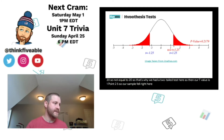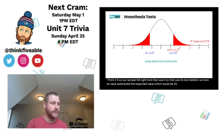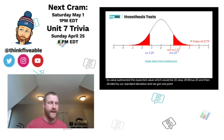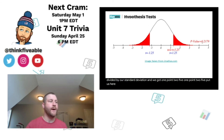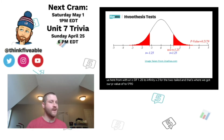With a two-tailed test, our t-value of 1.25 means our sample fell at that point. We calculated it by taking 28 minus 20 and dividing by our standard deviation to get 1.25. We then calculated the p-value using t-CDF from 1.25 to infinity, multiplied by 2 for the two-tailed test, and got a p-value of 0.2179, which is not low in this case.